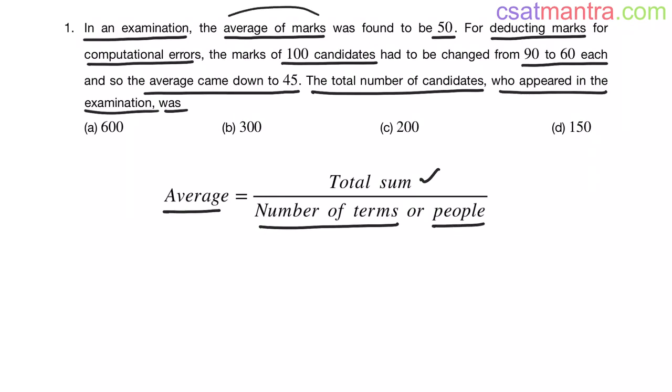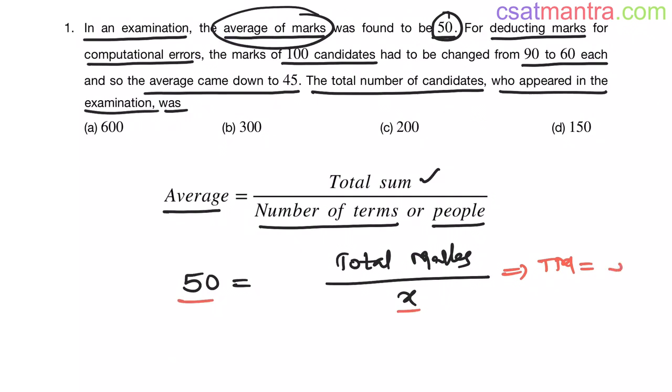Here it is given that average of marks was found to be 50. So average is 50. Total sum, total marks, we do not know that, so I am just writing it as total marks by number of terms or number of people. Number of people also we do not know, so I am assuming it as x. Now total marks, take it as TM, is x into 50. 50x my friends.